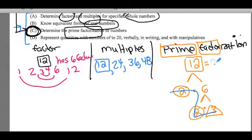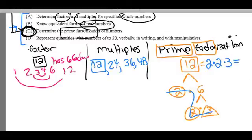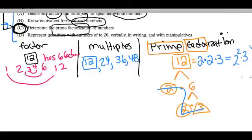So the prime factorization of 12 we could write as two times two times three, or, you know, just to have this other way of writing it, we could write it as two to the second times three to the first. That's a one. Two to the second times three to the first.